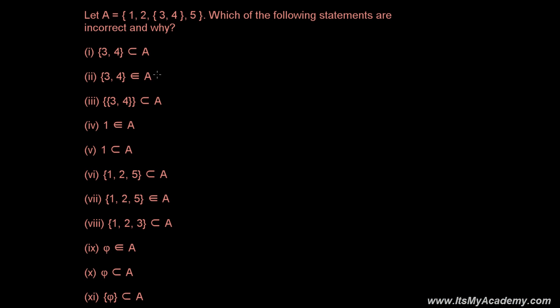I hope you already have a good concept of members — what is a member of a set and what is a subset of a set. Here I have a set A in which there are members: one is a member, two is another member, and {3, 4} — this looks like a set, and it is a set, but in this condition it is just a member of set A. And five is another member. So altogether, set A has four members.